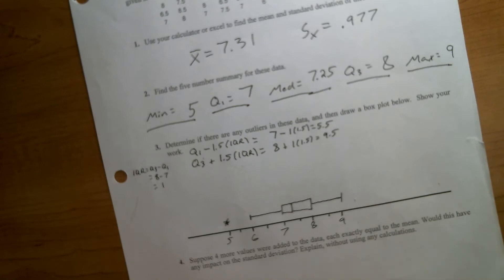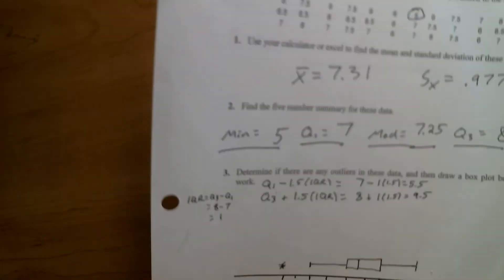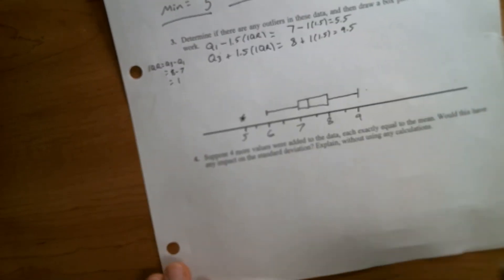Suppose four more values were added to the data, each exactly equal to the mean. Would this have any impact on the standard deviation? Explain without using calculations. So yes, this would have an impact on the standard deviation. Yes, it would lower the standard deviation.